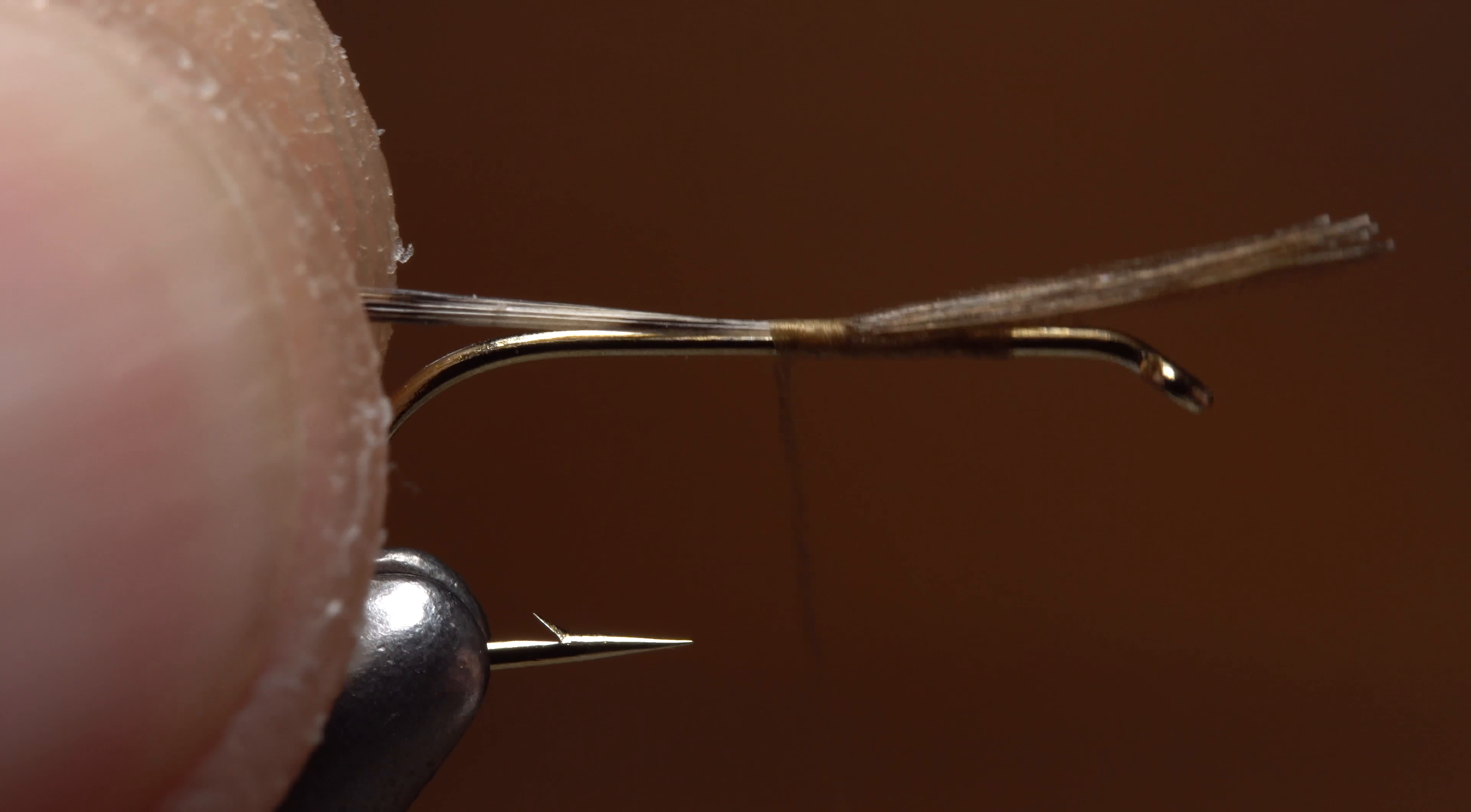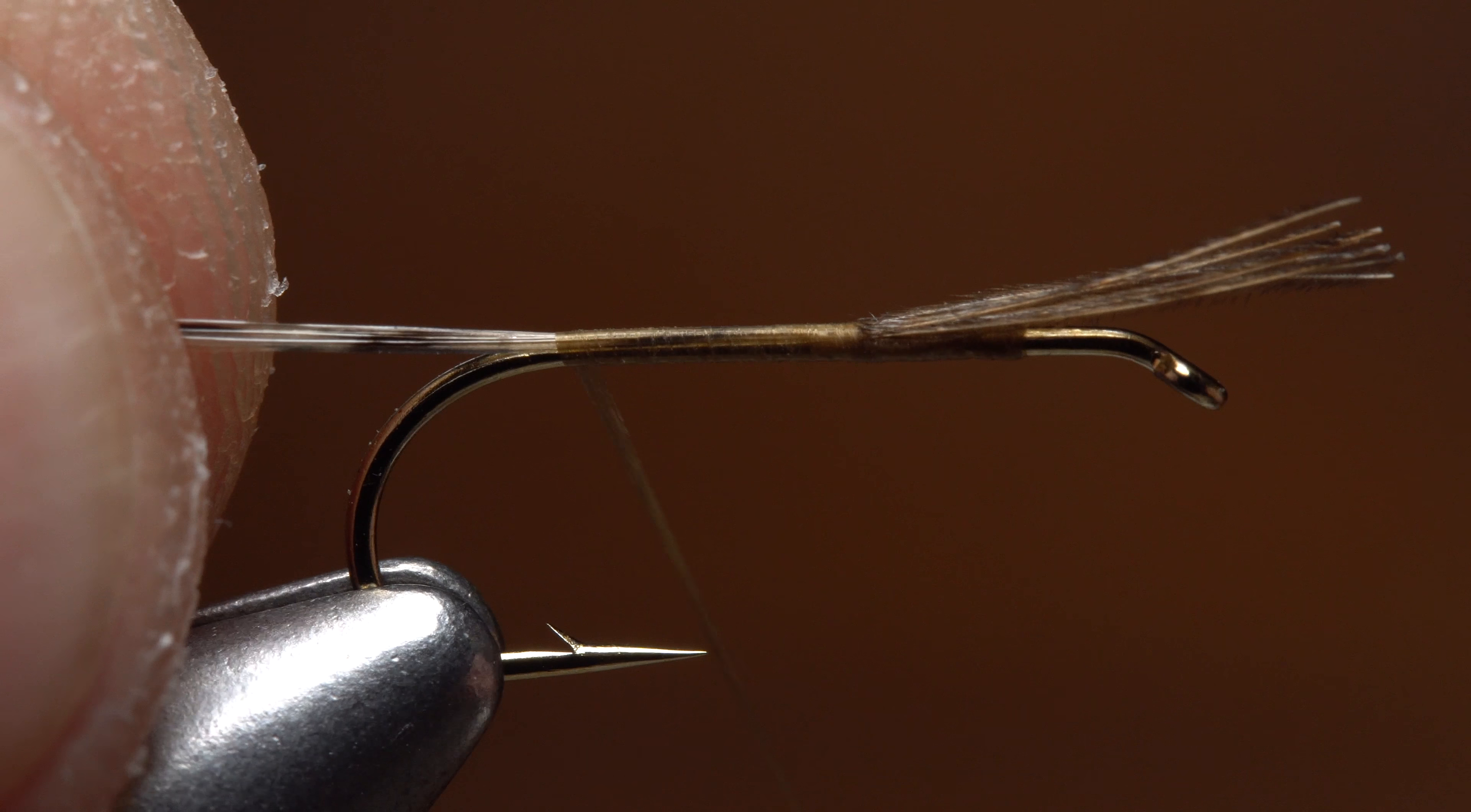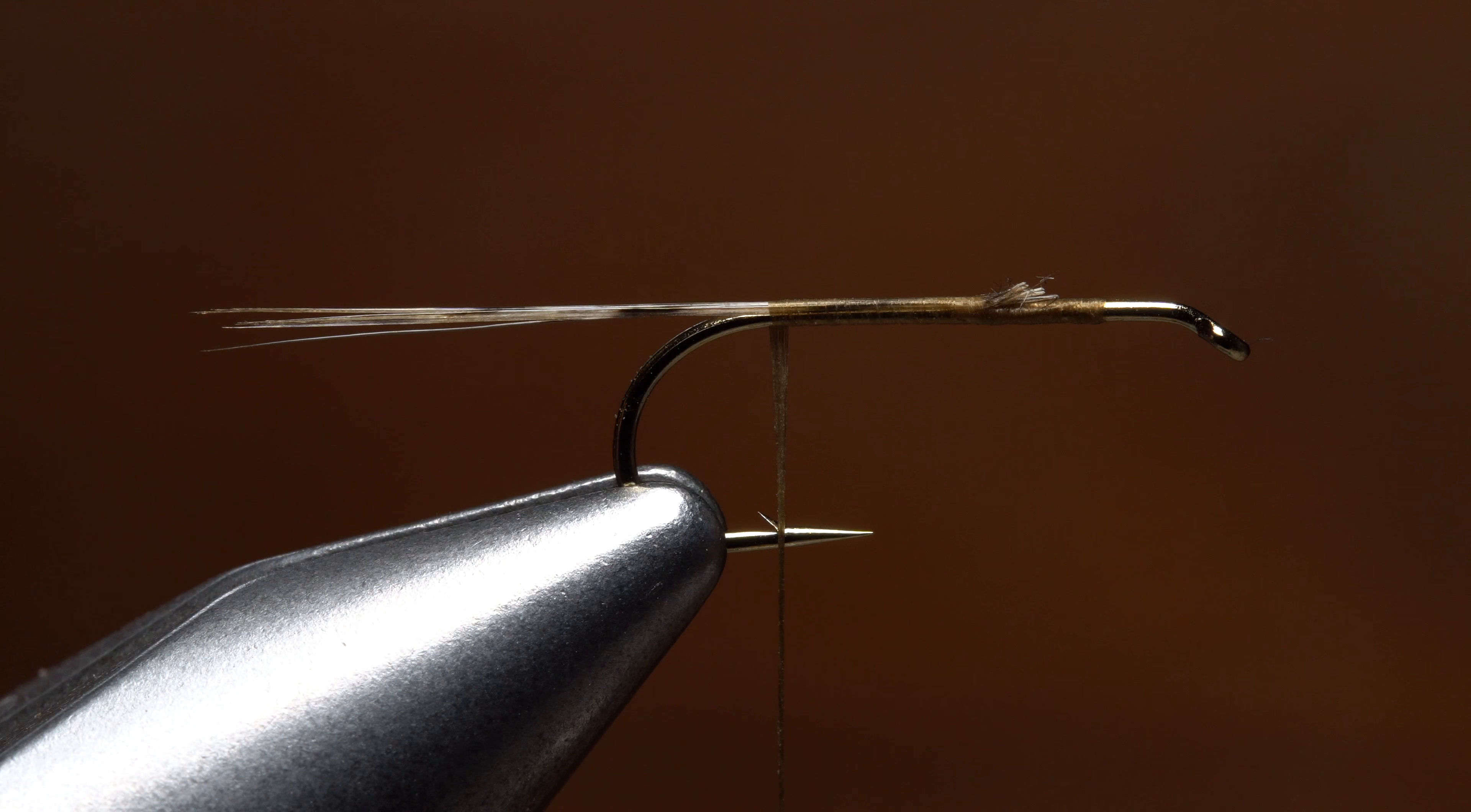Using your nail is generally more accurate than just your fingertip. You can then secure the tail with thread wraps back to the start of the bend. You should be left with a tail exactly as long as the hook shank.